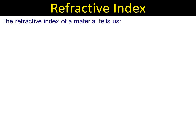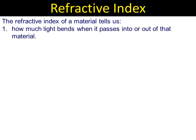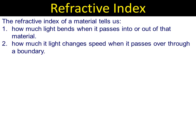So what does refractive index tell us? Well, it tells us two things. First thing it tells us, it gives us an indication of how much light bends when it passes into or out of a material, so when it passes across a boundary. It also gives us an indication of how much the speed of light changes in two different mediums.